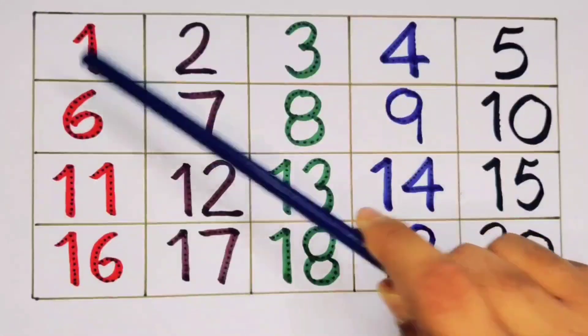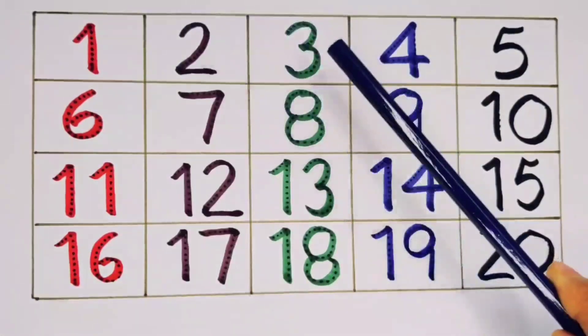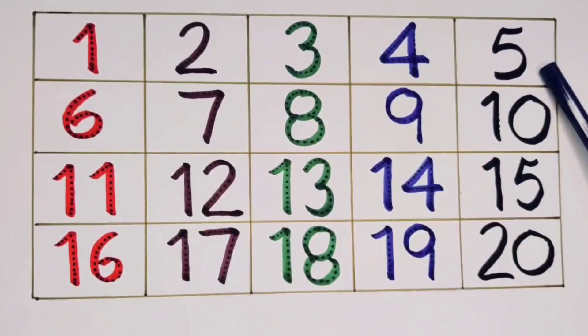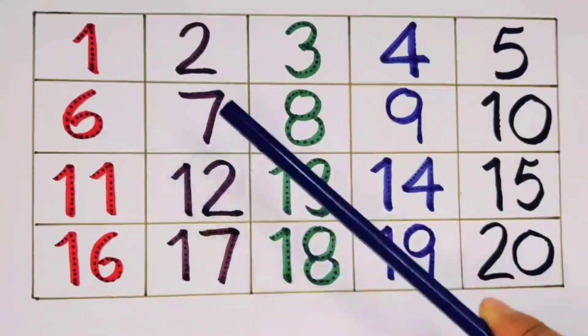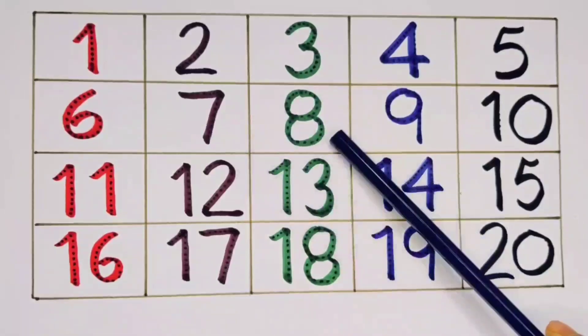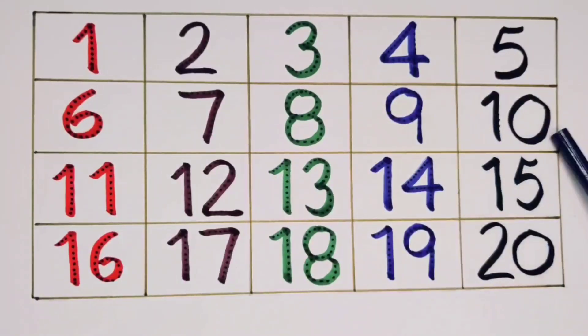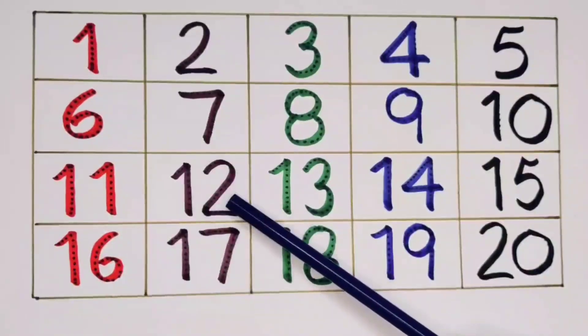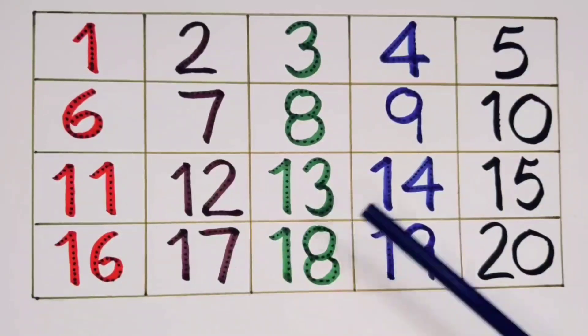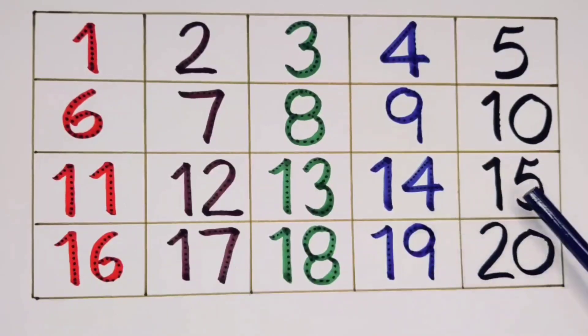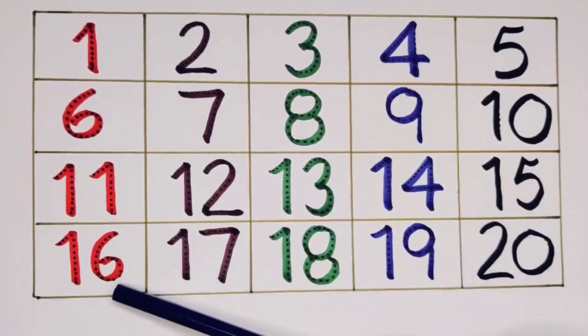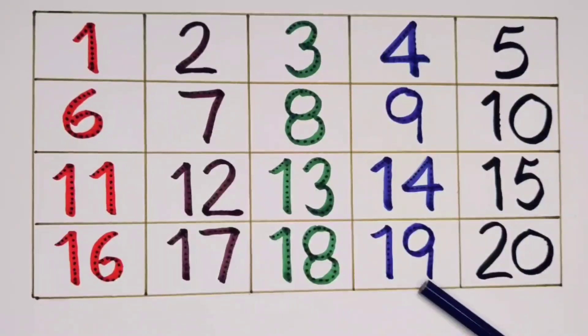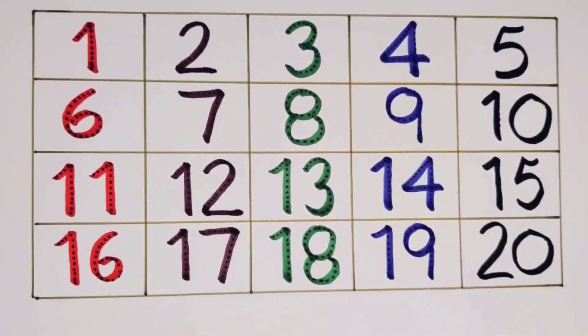We learn one, two, three, four, five, six, seven, eight, nine, ten. One one, eleven. One two, twelve. One three, thirteen. One four, fourteen. One five, fifteen. One six, sixteen. One seven, seventeen. One eight, eighteen. One nine, nineteen. Two zero, twenty.